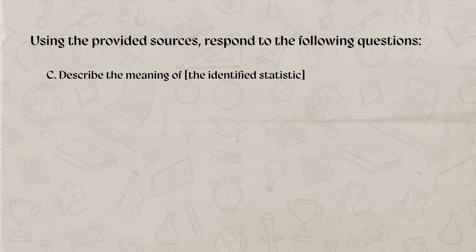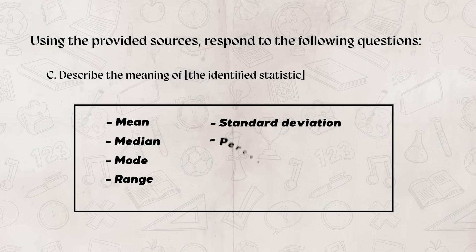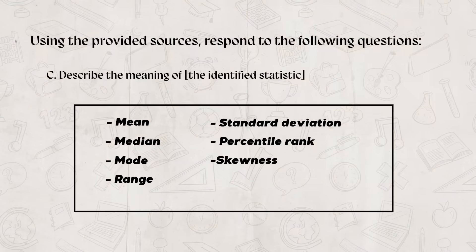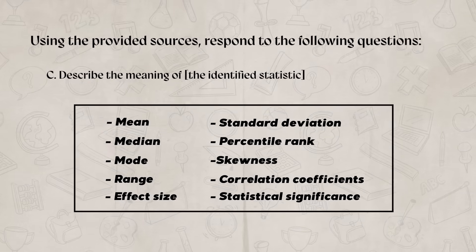For this part of the AAQ, you may have to talk about the mean, the median, the mode, range, standard deviation, percentile rank, skewness, correlation coefficients, effect size, or statistical significance.